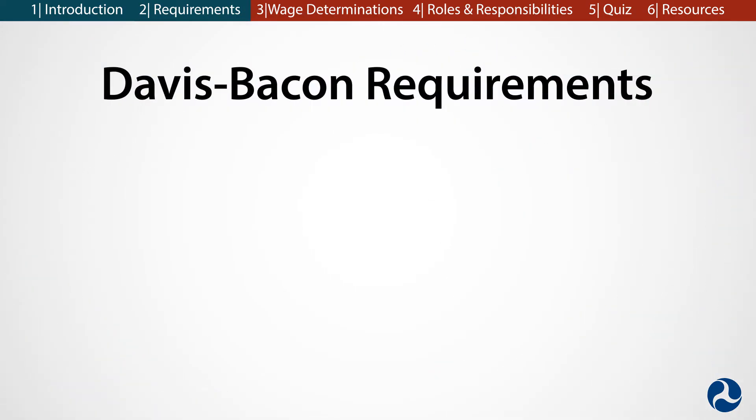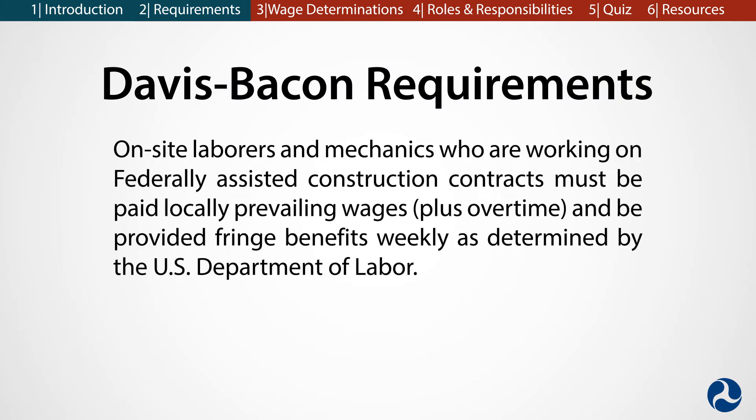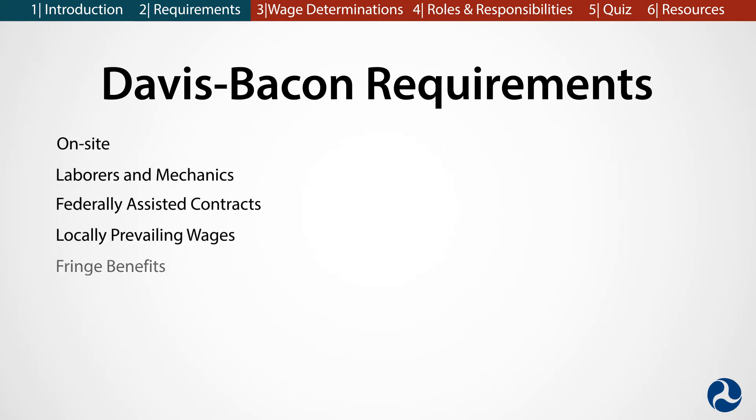The DBA can be summed up in one sentence. On-site laborers and mechanics who are working on federally assisted construction contracts must be paid locally prevailing wages, plus overtime, and be provided fringe benefits weekly as determined by the U.S. Department of Labor. Let's break this down piece by piece and go over each of the key elements.